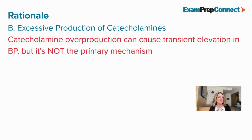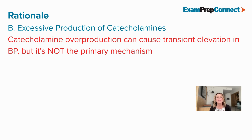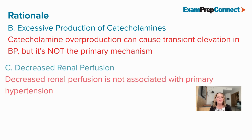B is incorrect because catecholamine overproduction can cause transient elevations in blood pressure, but it is not the primary mechanism.